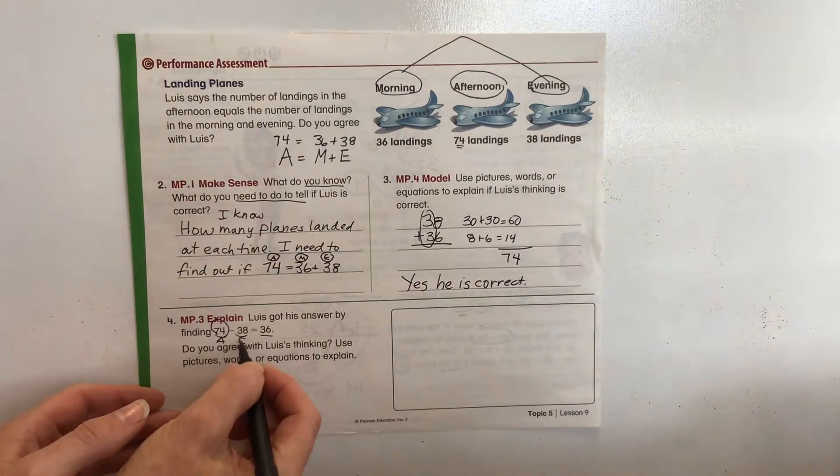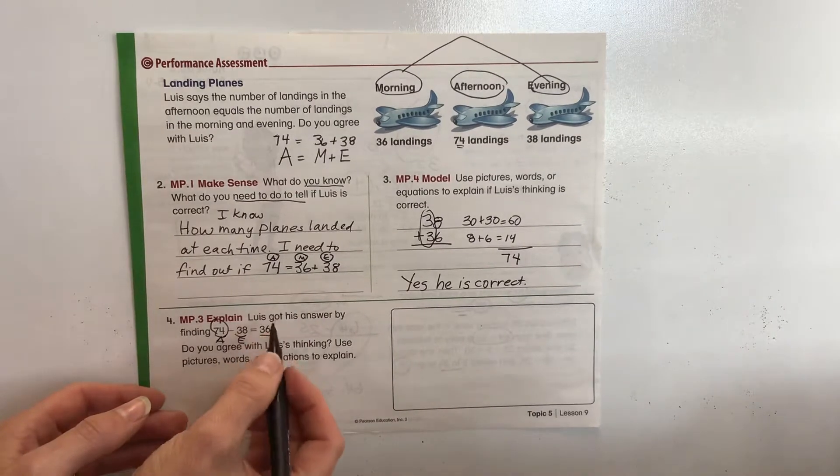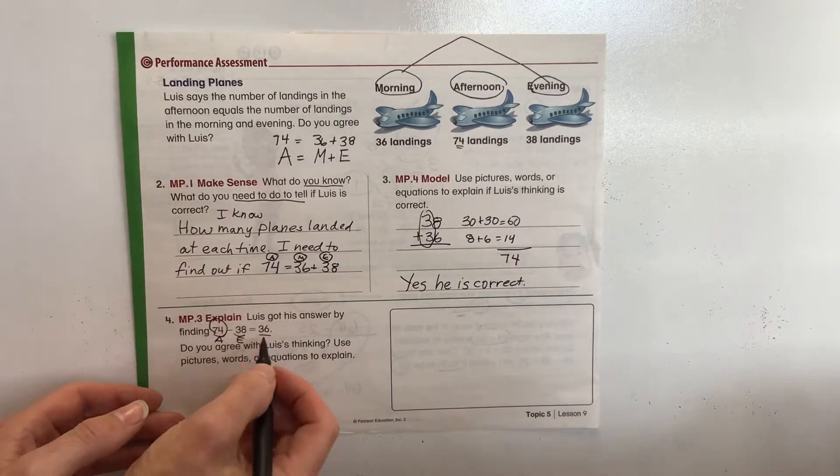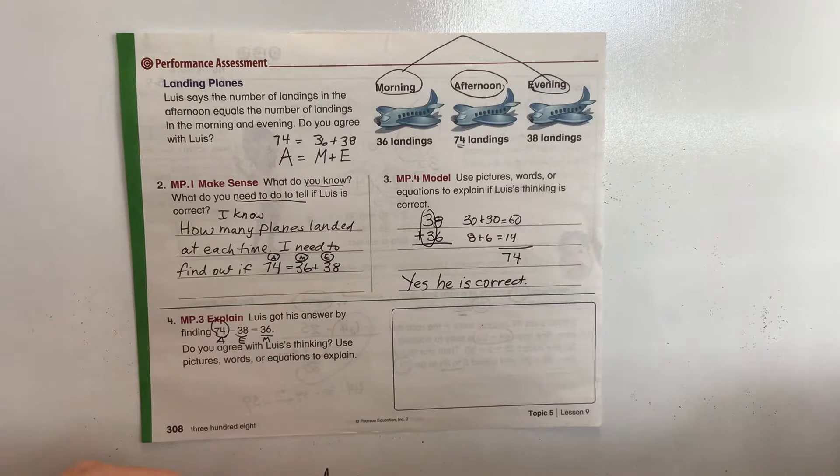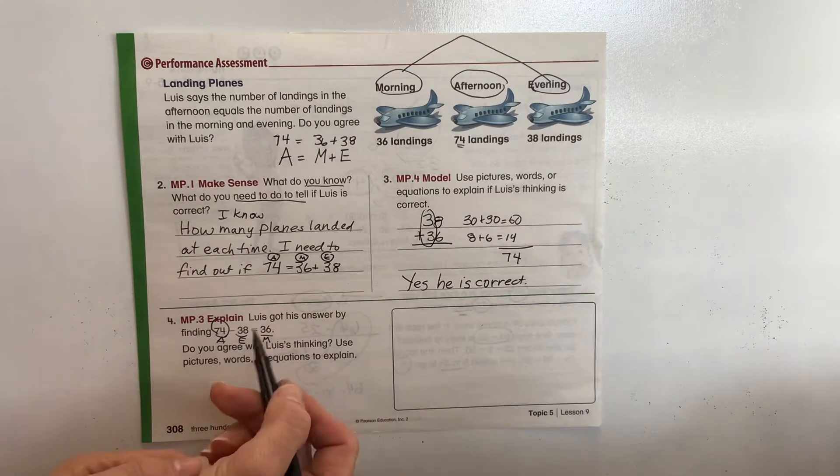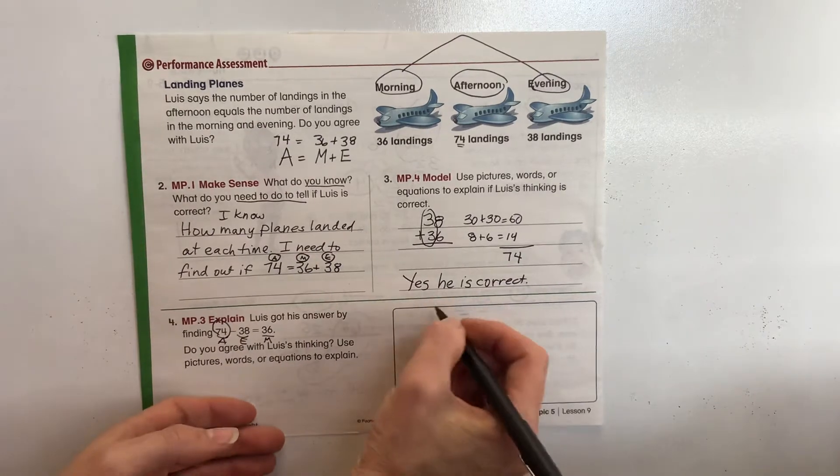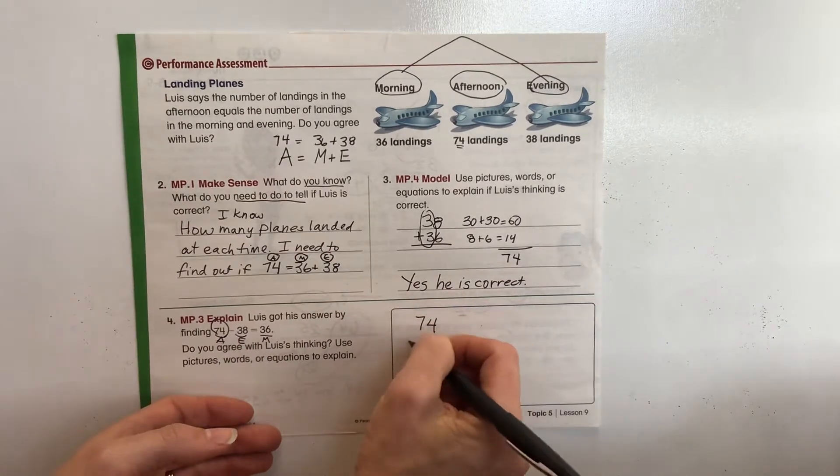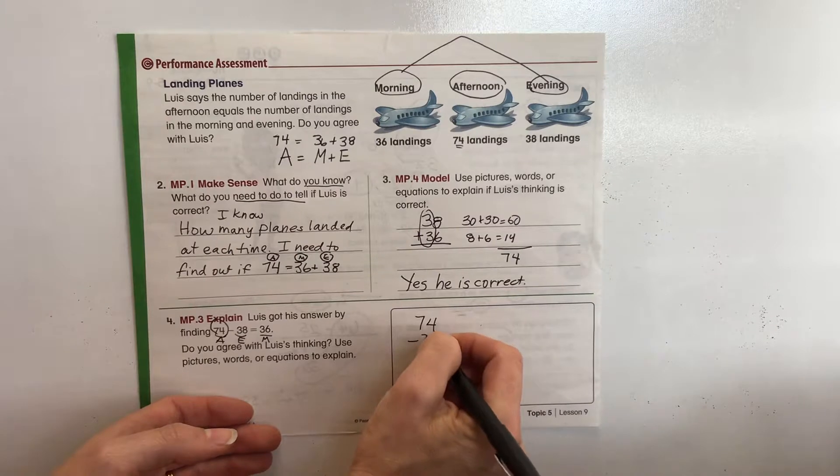He starts with his afternoon. He subtracts the evening of 38. And he says that the morning is 36. Do you agree? So let's take a look at this.